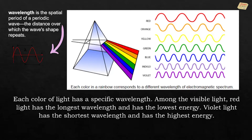Typically, the human eye can detect wavelengths from 380 to 700 nanometers. Each color of light has a specific wavelength. Wavelength is the spatial period of a periodic wave — the distance over which the wave shape repeats. Among the visible light colors, red has the longest wavelength and the lowest energy, while violet light has the shortest wavelength and the highest energy.